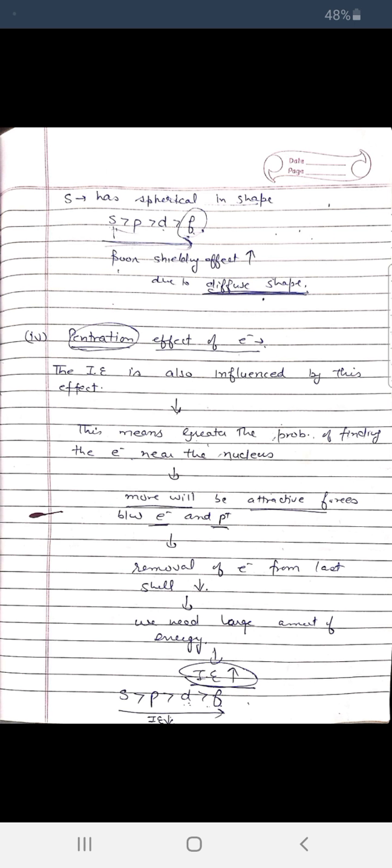The fourth factor is the penetration effect. Ionization energy is also influenced by penetration. This means greater the probability of finding the electron near the nucleus — that is, when the electron penetrates close to the nucleus — the attraction forces between the electron and the proton are very strong. So it becomes really difficult to remove that electron, meaning we need more energy, and ionization enthalpy is higher.